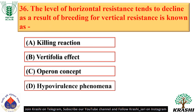Question number 36. The level of horizontal resistance tends to decline as a result of breeding for vertical resistance; this is known as the killing reaction — option A. It is a hypersensitive response associated with disease resistance.